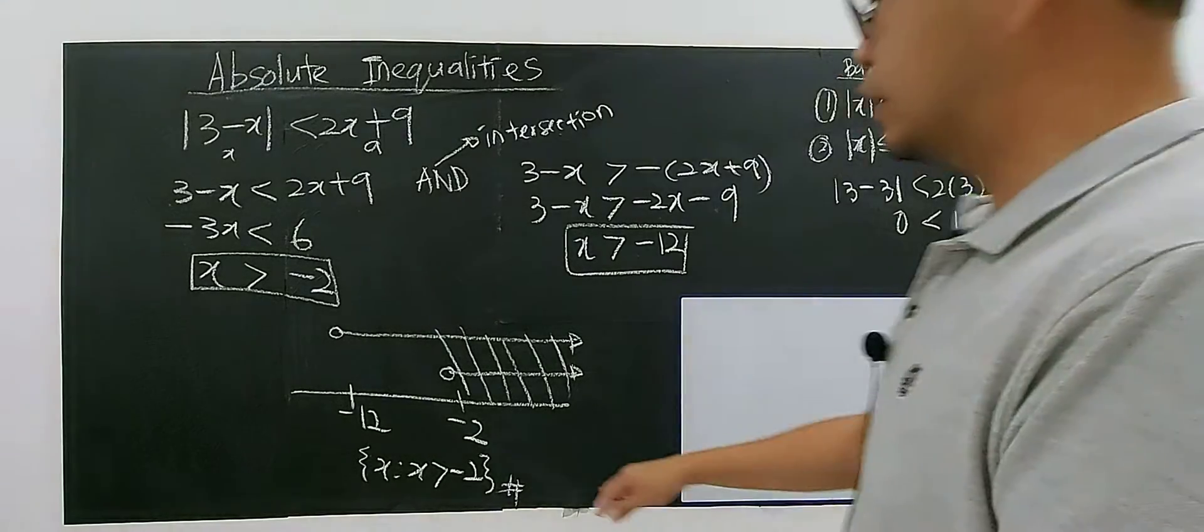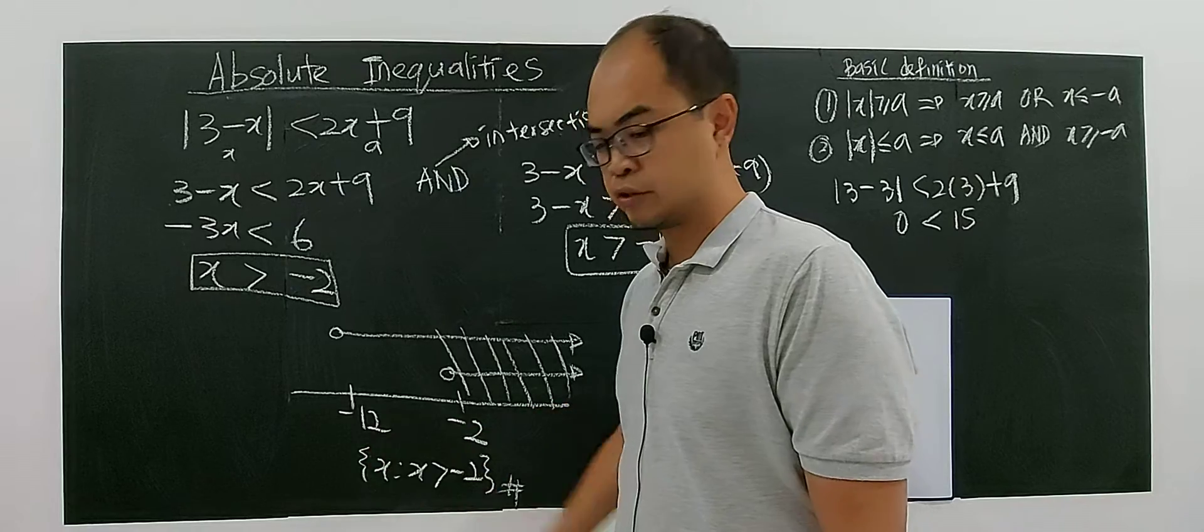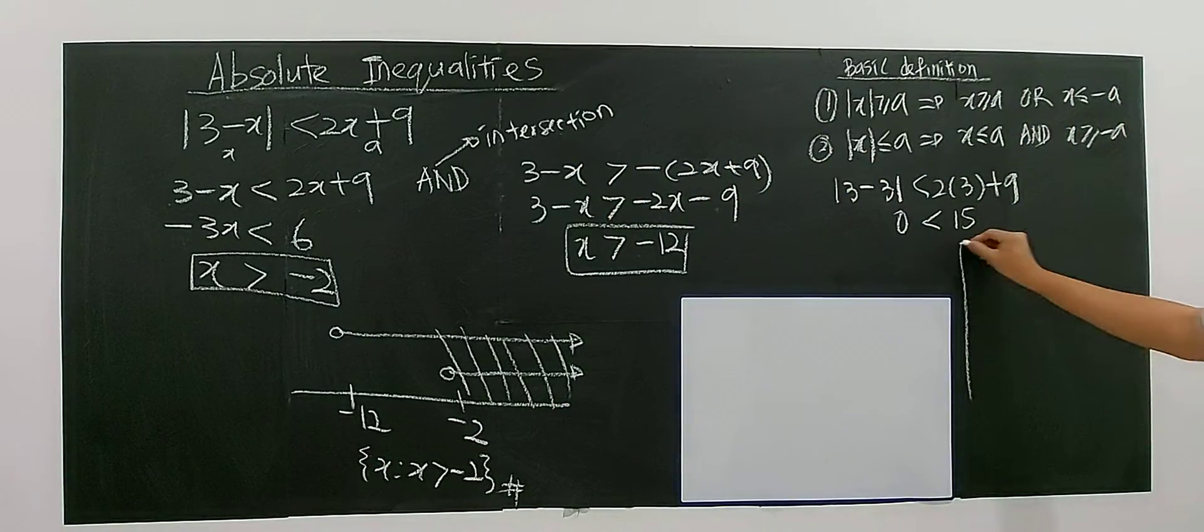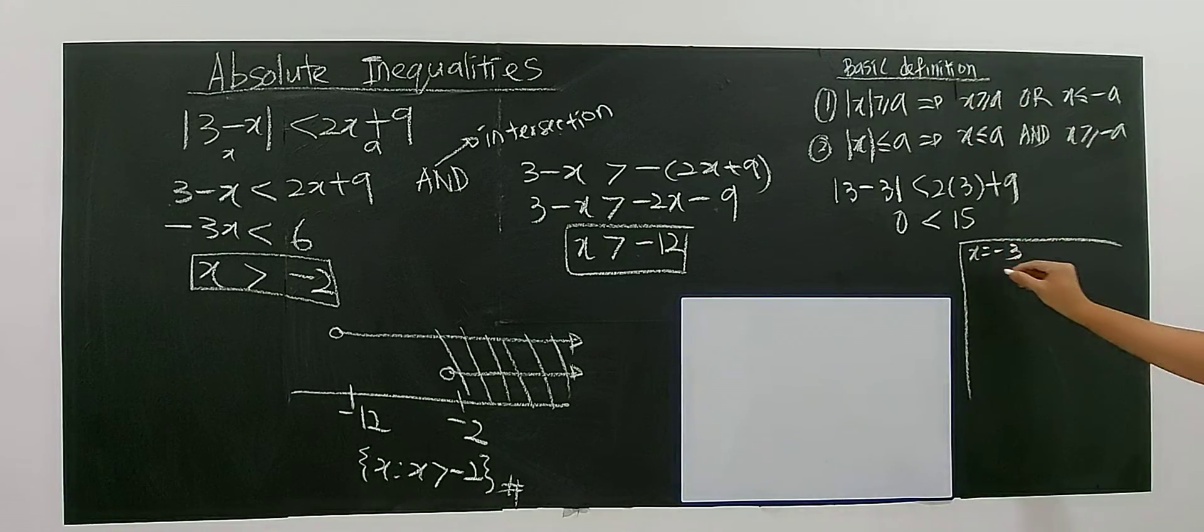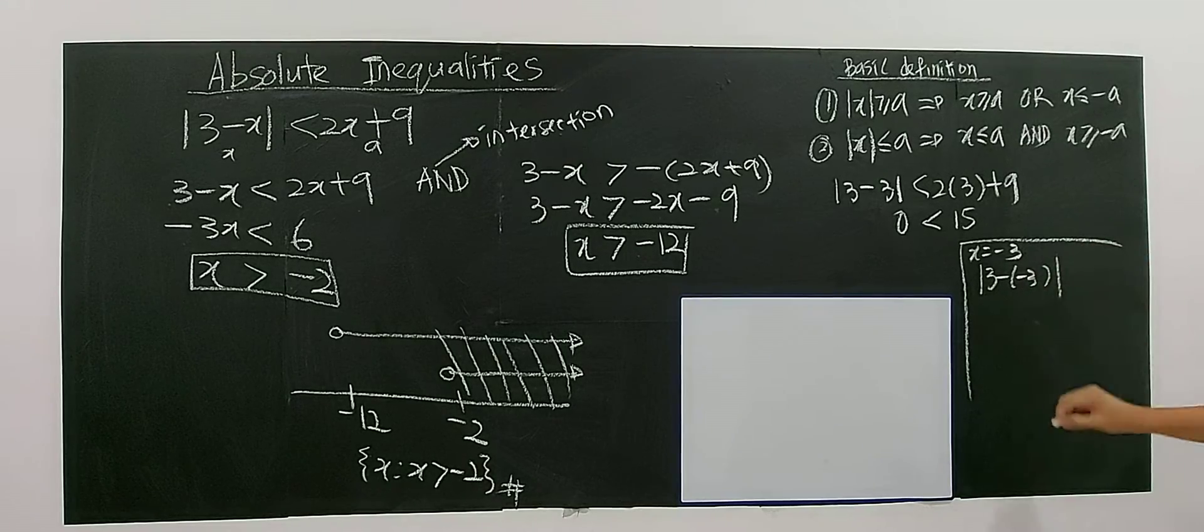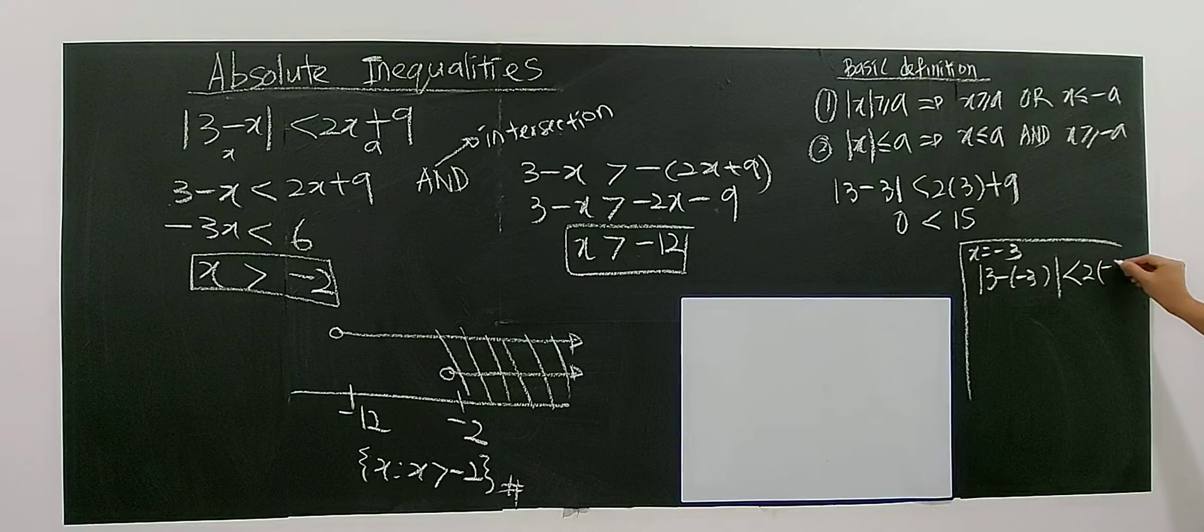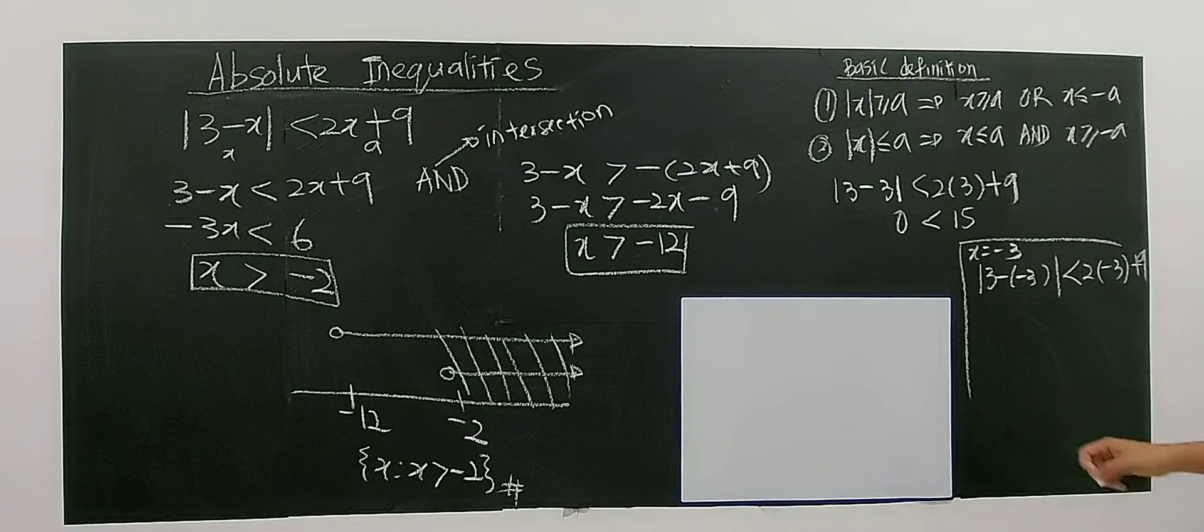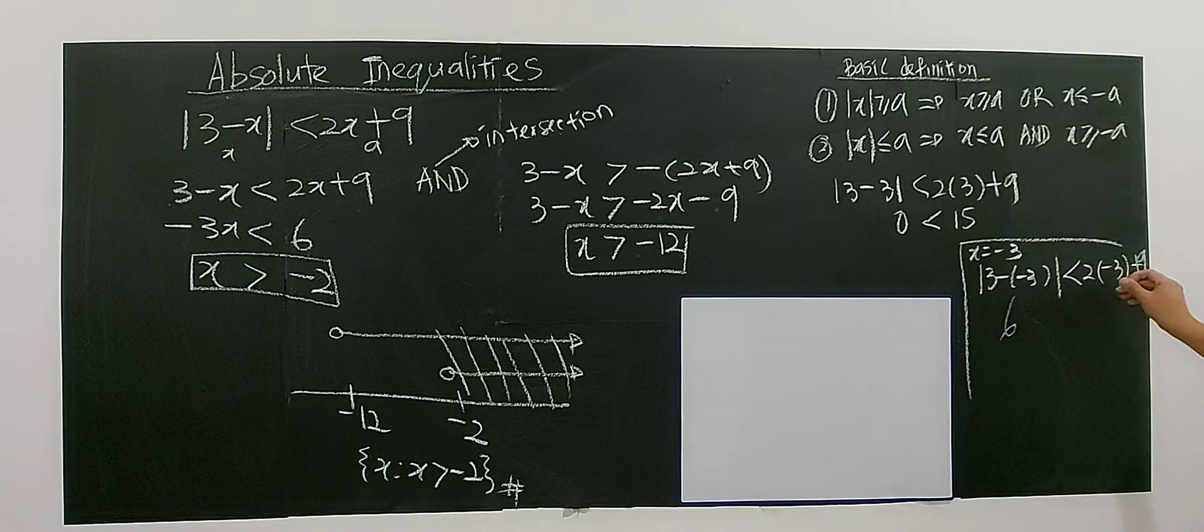So if you choose a number that not in the range, for example, negative 3. For example, you choose negative 3. X to be negative 3. You substitute. You have modulus of 3, negative 3. So you put, you just put it negative 3 plus 9. Then you justify whether this is a true statement or false statement. Here, you have 6 modulus. You get 6. Here, you have negative 6 plus 9.